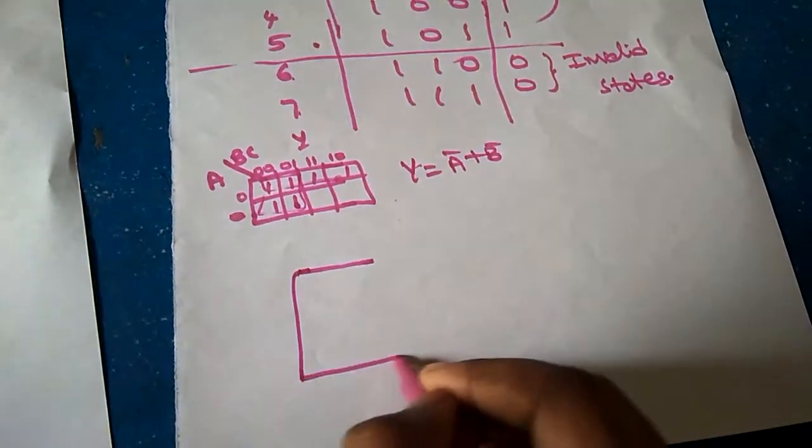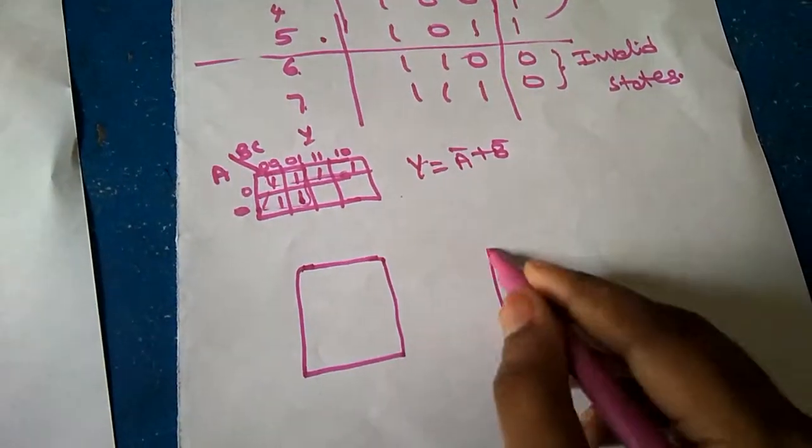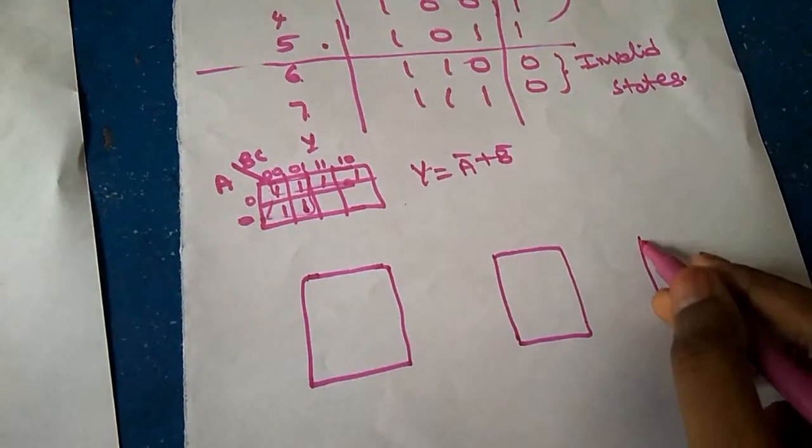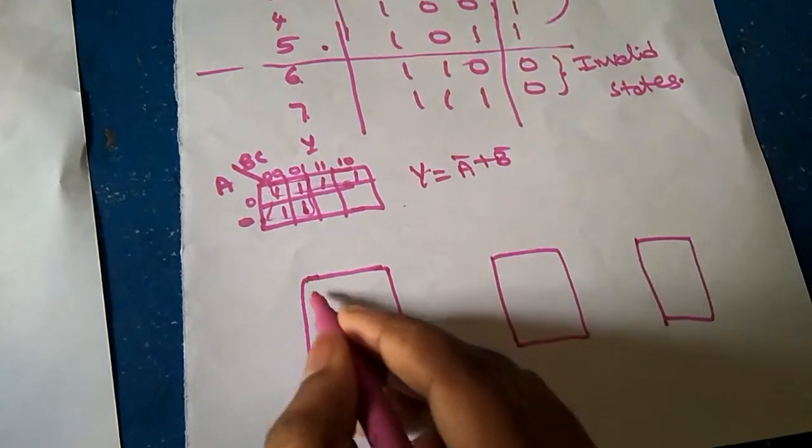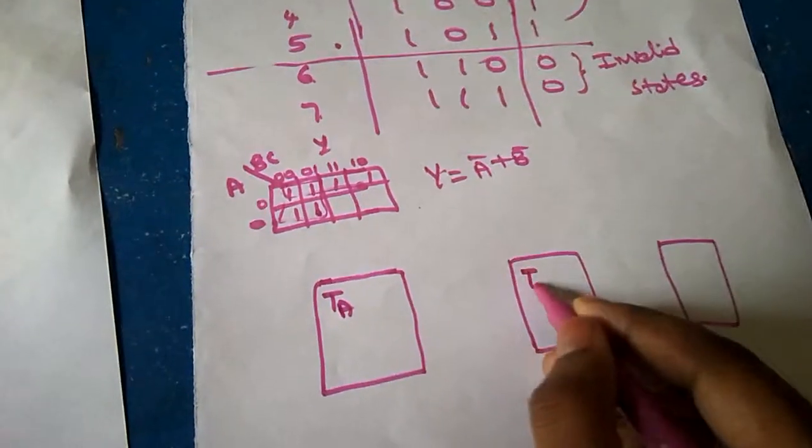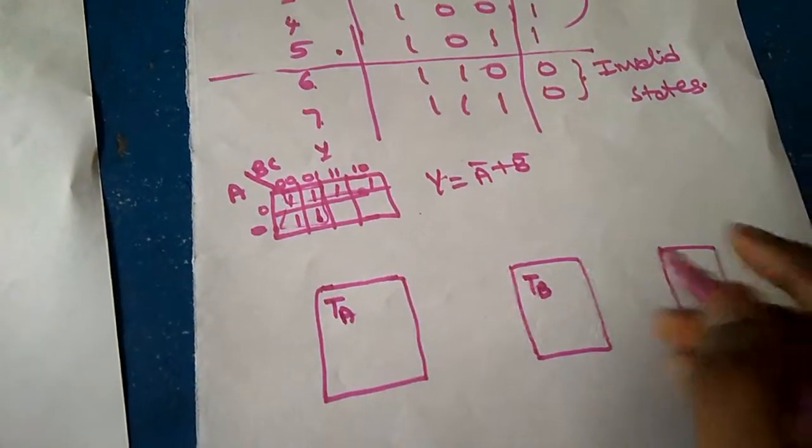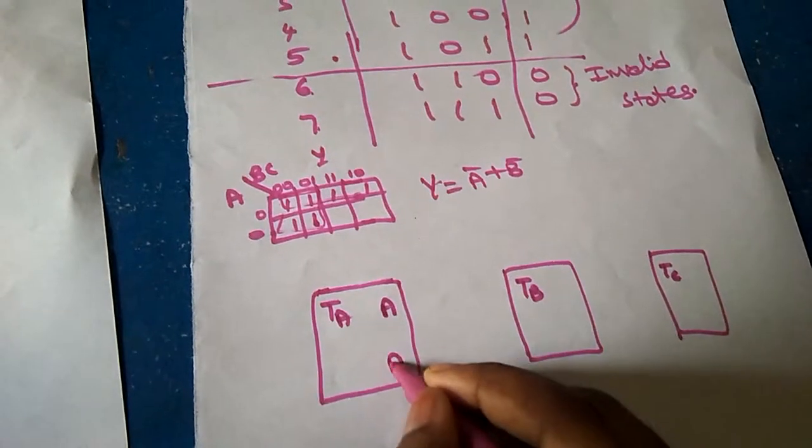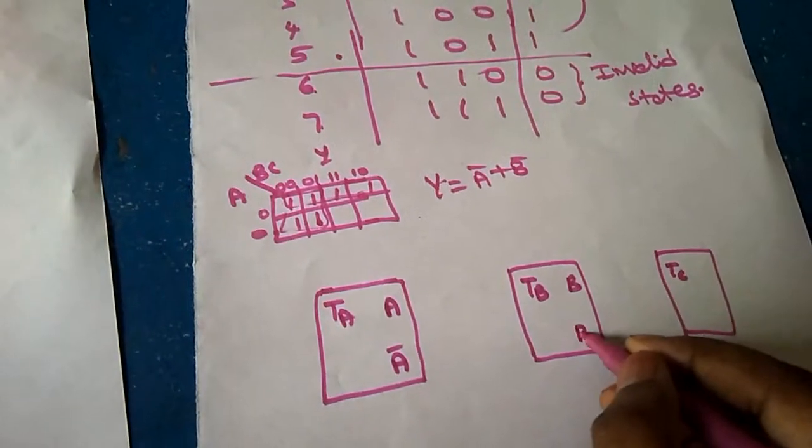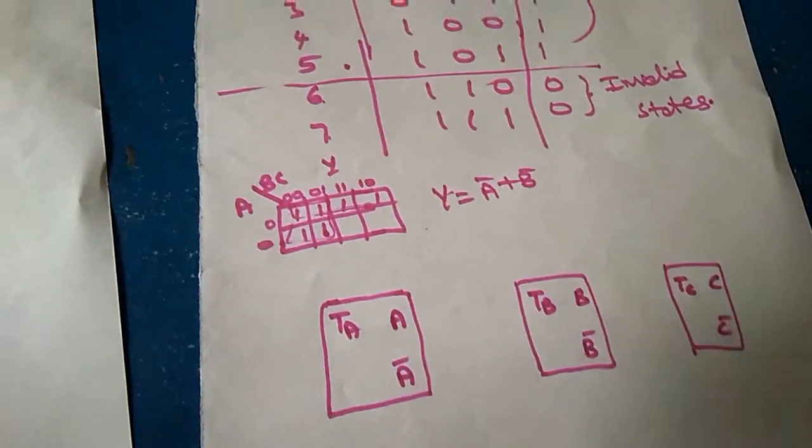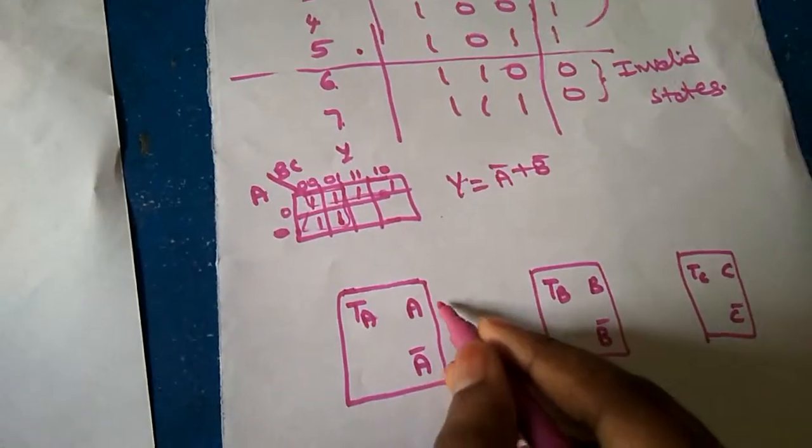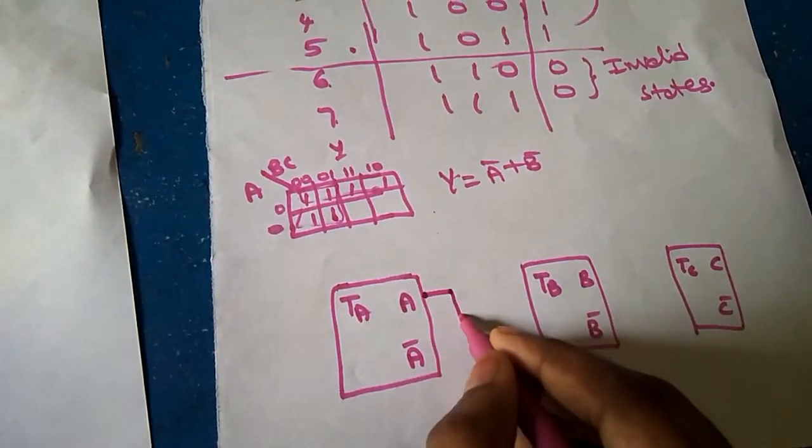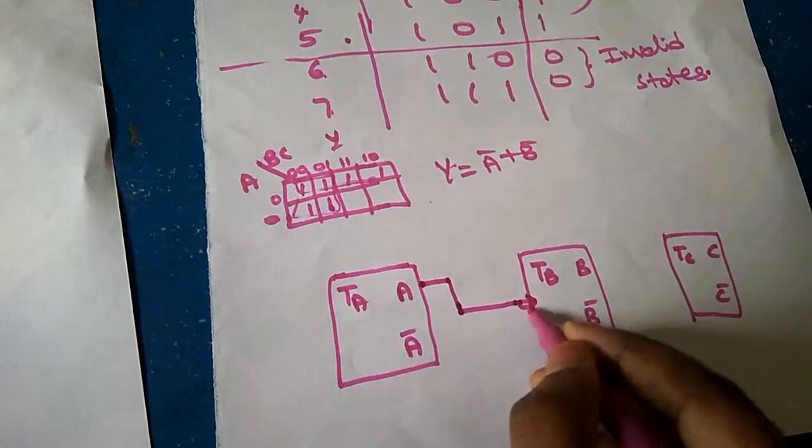Now we have to draw the logic diagram. As we require three number of flip-flops, three flip-flops are taken. That is TA - any flip-flop can be taken, I am taking T flip-flop. TA, TB, TC, A, A bar input, B, B bar, C and C bar. As this is an asynchronous counter, the output of one flip-flop is the input of other flip-flop.